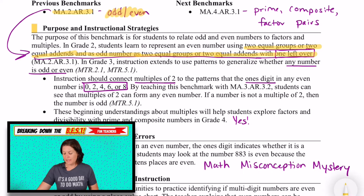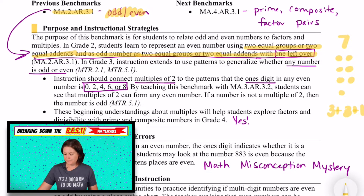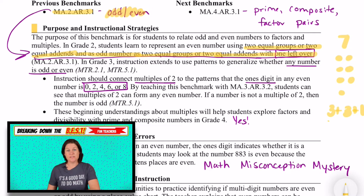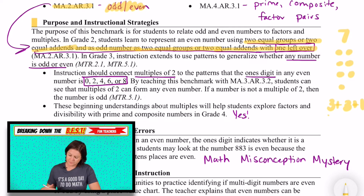So if they had seven, they would show three plus three plus one to show that that is odd. And they can apply what they've learned in second grade to third grade where we kick it up a notch.